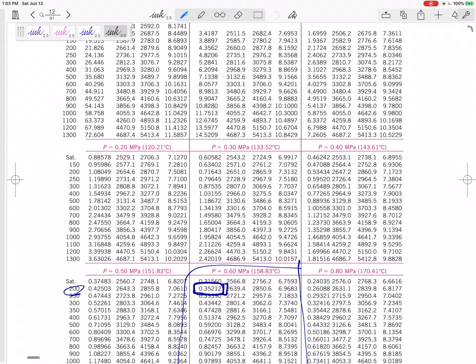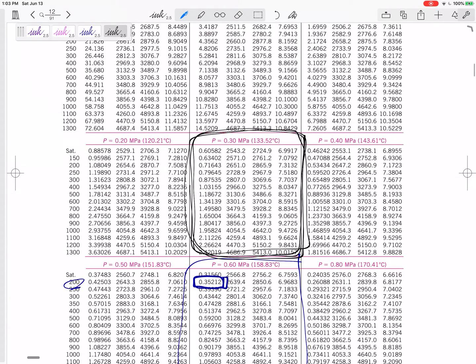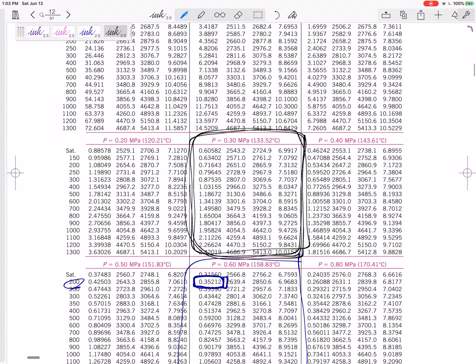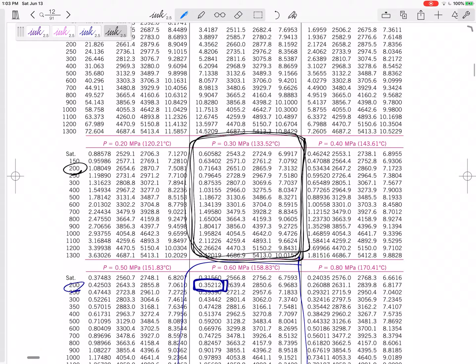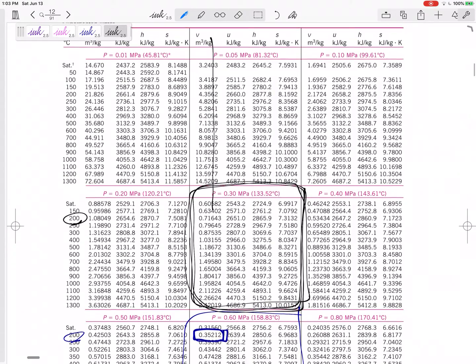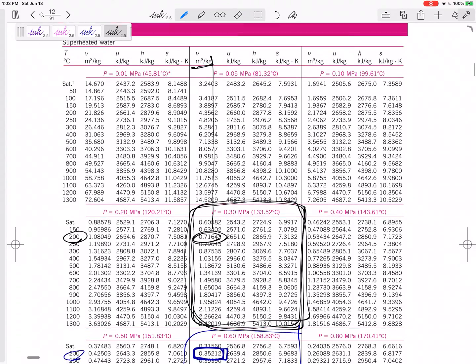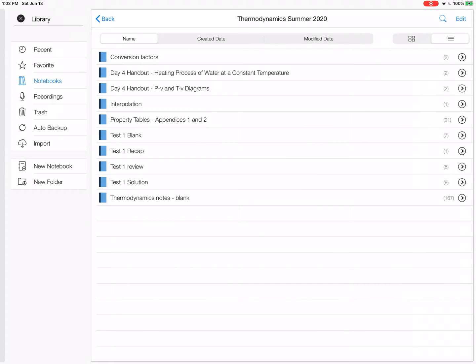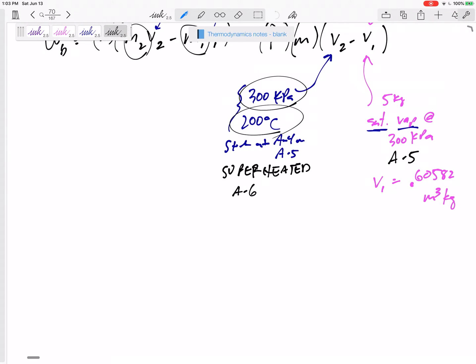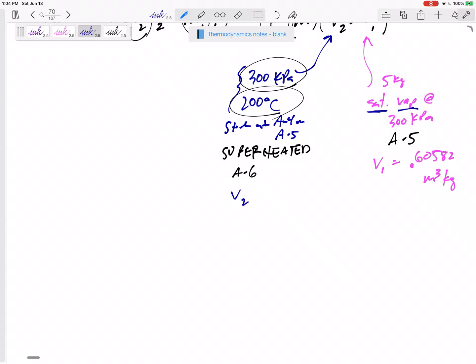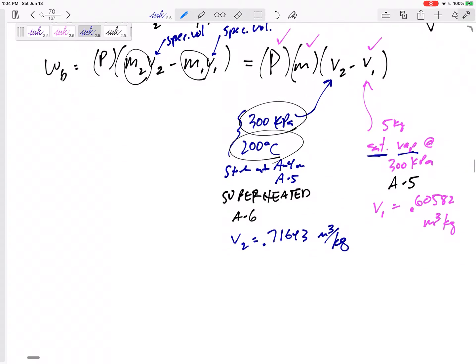Superheated for a pressure of 300 kPa. Help me out, I've been known to mess up unit conversions. That right there, 0.3 MPa is 300 kPa and a temperature of 200. So my v is 0.71643 meters cubed per kilogram.